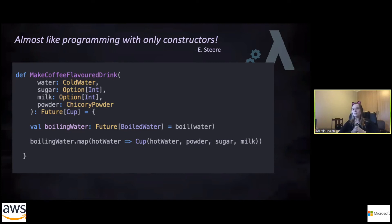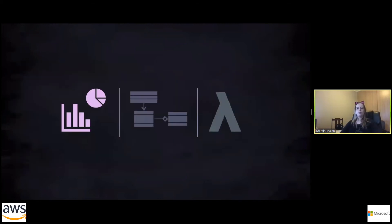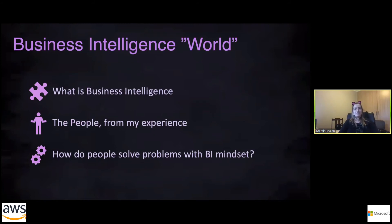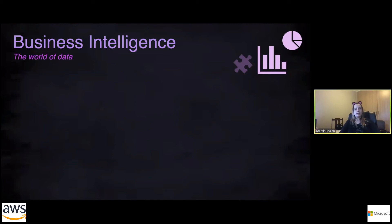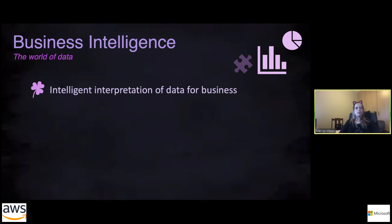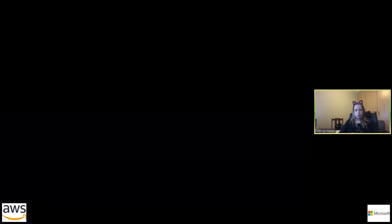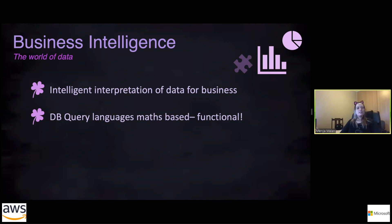That's a lot to take in. If you want more info on the technical details, I'm going to be online all day. So, business intelligence. As expected, I'll explain this in the same categories. BI is the world of data — more particularly, the intelligent interpretation of data for business value. Database query languages are also math-based, so they're theoretically functional. Think of your database queries: you do a SELECT, and given a set of data in your database, you get the same results every single time until your data changes. It's not mutating — it's creating a new state.